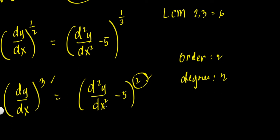So for this differential equation: the order is 2 since d²y/dx² is the highest differential coefficient, and the degree is also 2 since d²y/dx² is raised to the power 2 after eliminating the radicals and fractions.